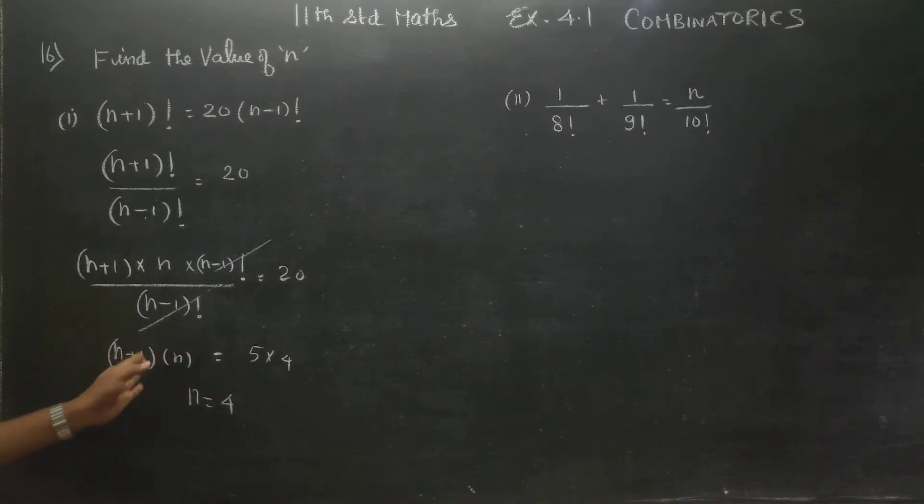If you multiply, quadratic equation is equal to 4. n minus 1 is equal to n. 5 into 4 is equal to 4. This is our first answer.